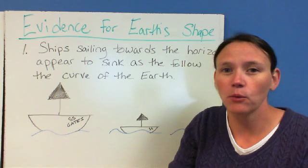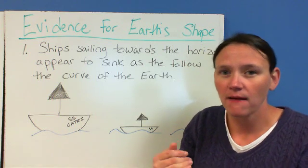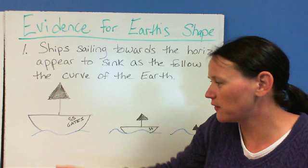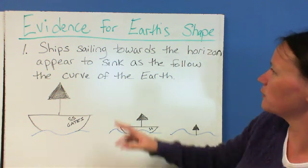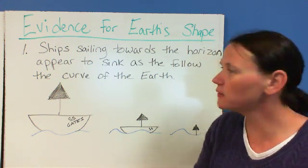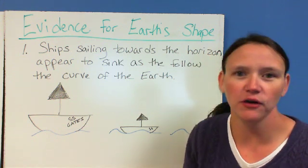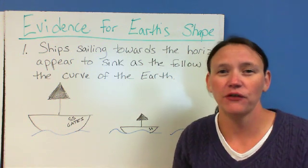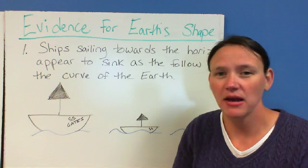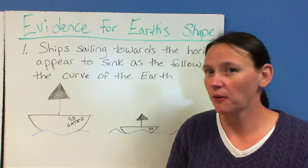If the Earth wasn't round, you wouldn't see that. But the curve of the Earth gives it that sinking appearance. So ships sailing towards the horizon appear to sink as they follow the curve of the Earth, and this was one of the first things that got people thinking about the idea that the Earth is in fact round and not flat.